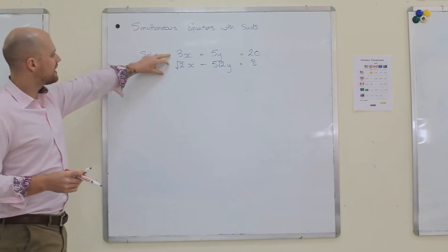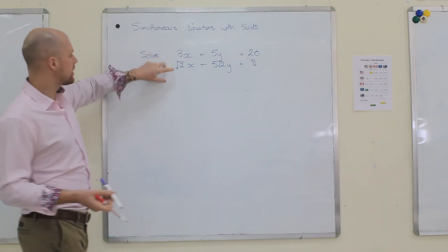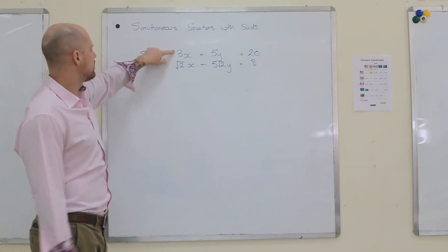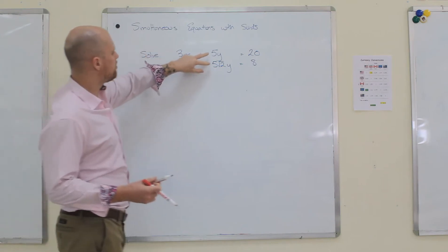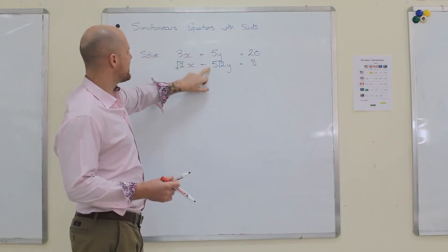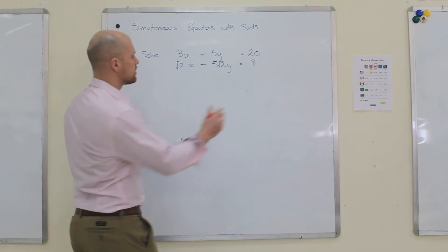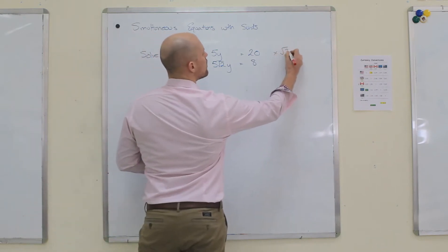Now, if I wanted to make the x coefficients the same, I could. I could times this by 3 and this by root 2. But if I look, both the y's have a 5 in it, so it's probably easier to just times the top equation by root 2.